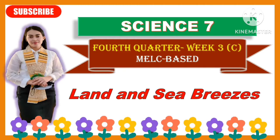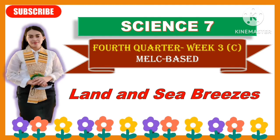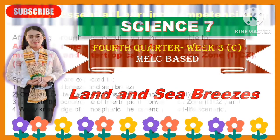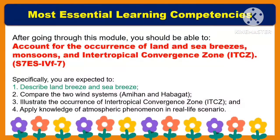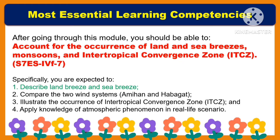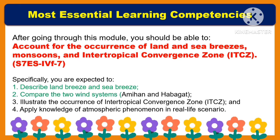This will be the fourth quarter topic, week three. For the most essential learning competencies, after going through this lesson, you should be able to account for the occurrence of the land and sea breezes, monsoon zones, and intertropical convergence zones, or ITCZ.